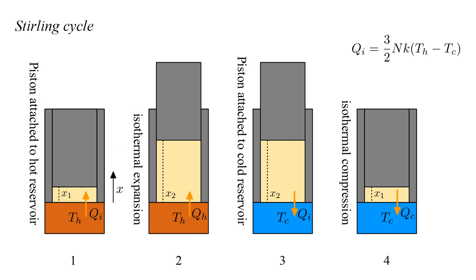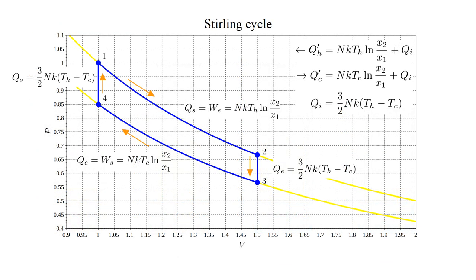Whereas the Carnot cycle uses adiabatic expansion and compression to cool and heat, the Stirling cycle cools and heats the gas by direct transfer of heat Q-I, equal to three-halves N-K times (T-hot minus T-cold), to the cold reservoir going from state two to state three, and heat Q-I from the hot reservoir going from state one. This results in the Stirling cycle extracting more heat from the hot reservoir — call it Q-hot prime — and delivering more heat to the cold reservoir — call it Q-cold prime. In each case, these are greater than the Carnot cycle values by Q-I.